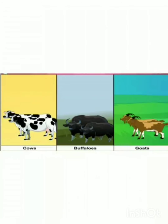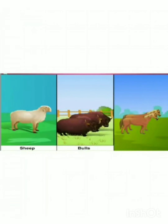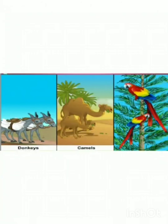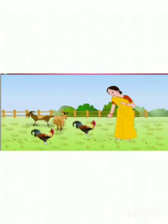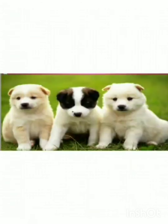Domestic animals. Some of the domestic animals are cows, buffaloes, goats, sheep, bulls, horses, donkeys, camels, parrots, hens, dogs and cats. They are called domestic animals because they live in or around people's houses. People feed them and tend them. Some domestic animals give us milk, meat and wool. Some domestic animals are kept as pets.